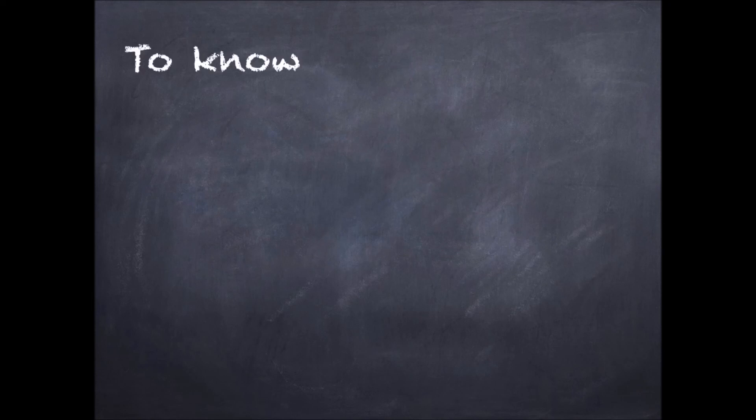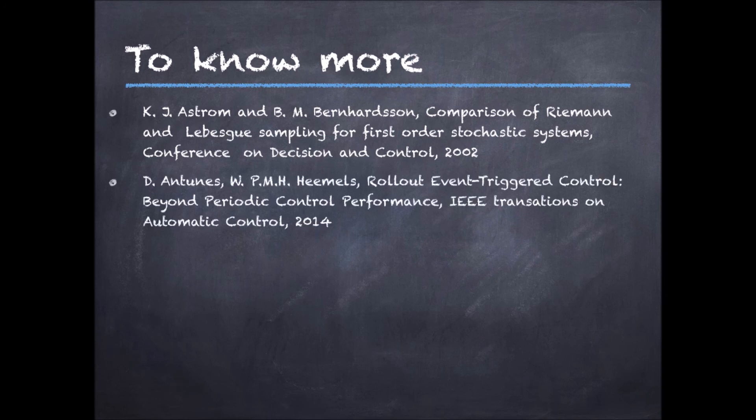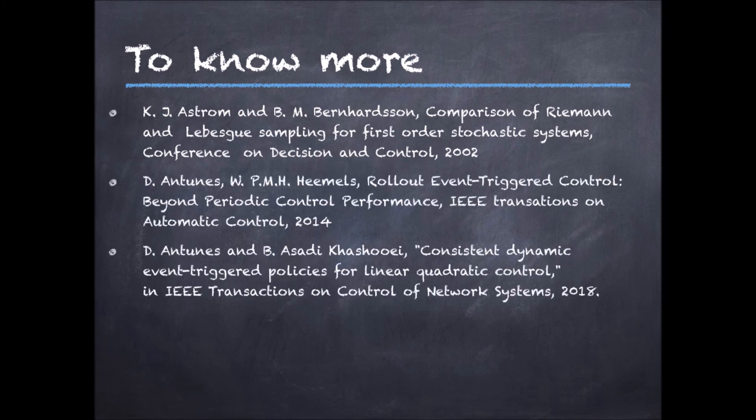If you want to know more, you can find the Lebesgue sampling idea in this paper, two different consistent event-triggered control policies in these two research papers. You can find more information about this research as well as download these papers in the research section of my webpage. Moreover, feel free to send me an email in case you have any questions. Thanks for watching.